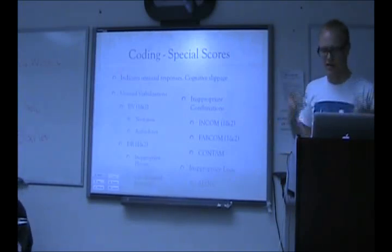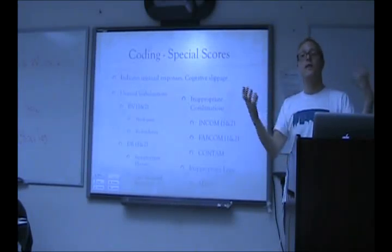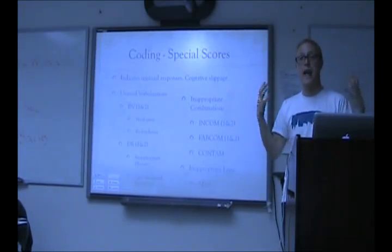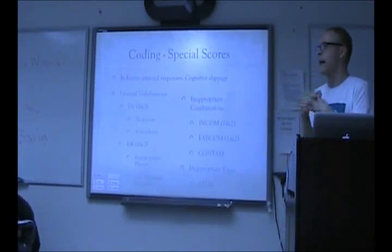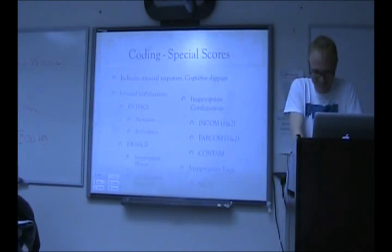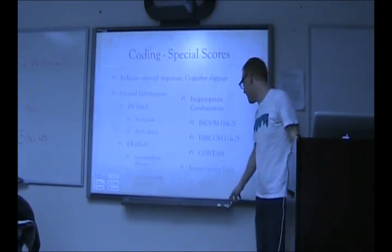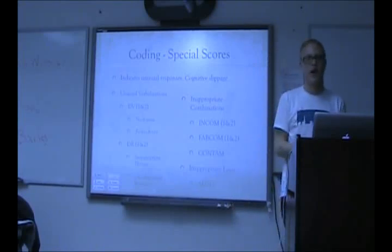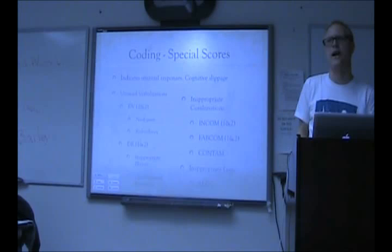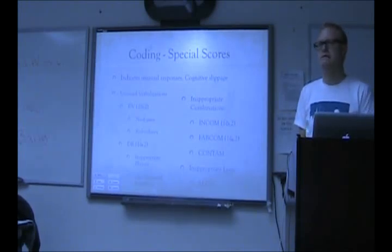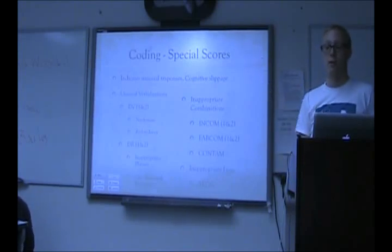CONTAM is contamination — you're blending responses in a way that makes no sense. It means they're perceiving two different things and can't give a single response, so they're blending them together — like 'a butterfrog.' CONTAM is sort of the worst, and each special score is assigned a weighted score of how significant it is. When you have CONTAM, you give no other special scores. The next one is inappropriate logic — ALOG — for example: 'It's a baby. Well, why is it a baby? Because it's small on the page.' That doesn't mean it's a baby — it could just be a small man or somebody seen from far away.